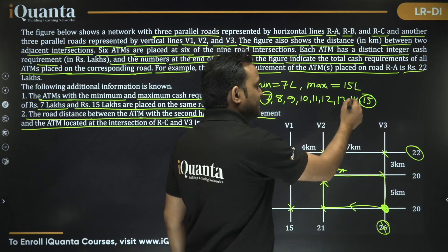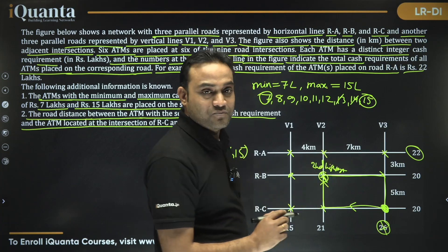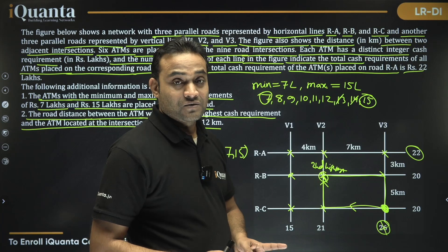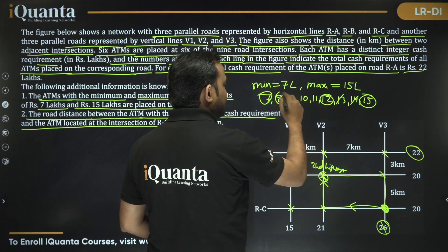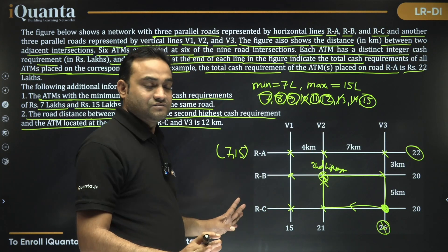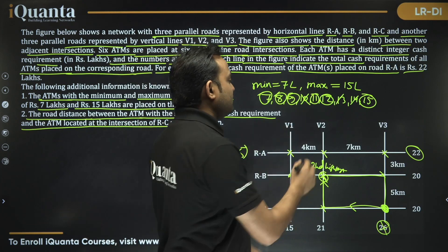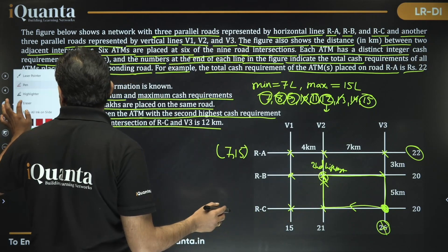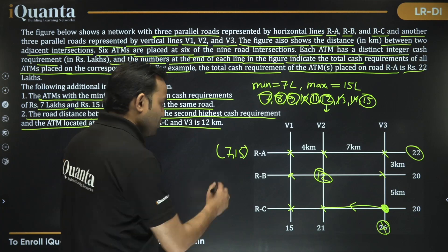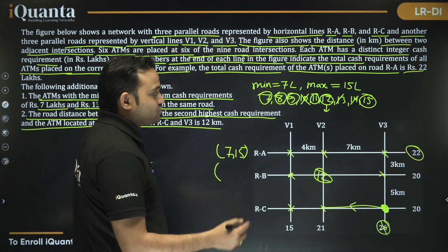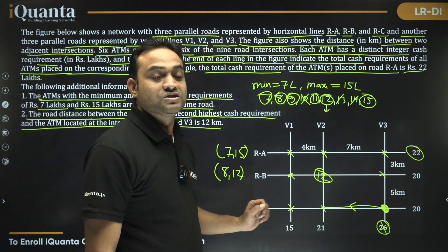We need two distinct integers summing to 20 (the remaining road total). Options are 12+8 or 11+9. Checking: if one ATM is 13, the other must be 7, but 7 is already taken. If 14, the other is 6 — impossible. So valid pairs are 12+8 or 11+9. Since the second highest must be placed at the identified intersection, it must be 12, confirming 12 and 8 are on that road.